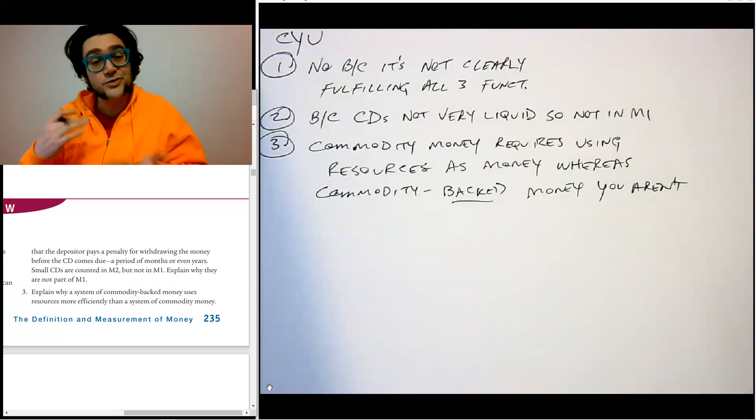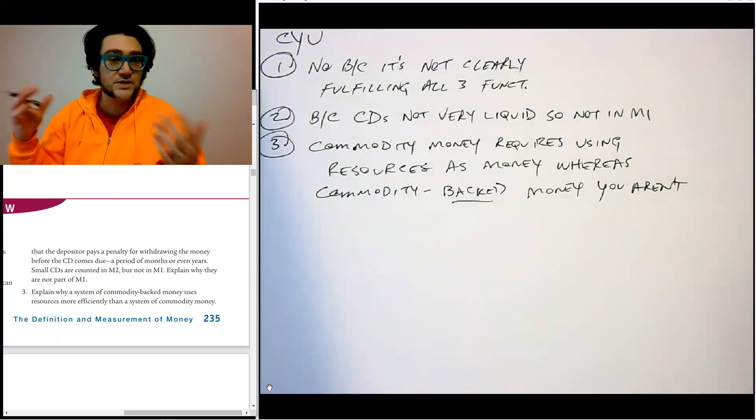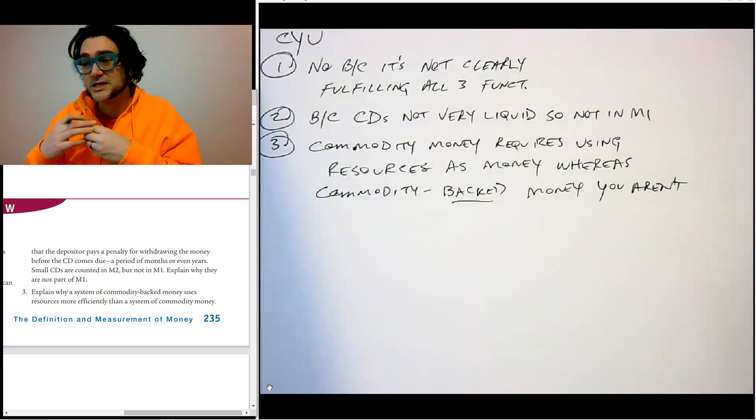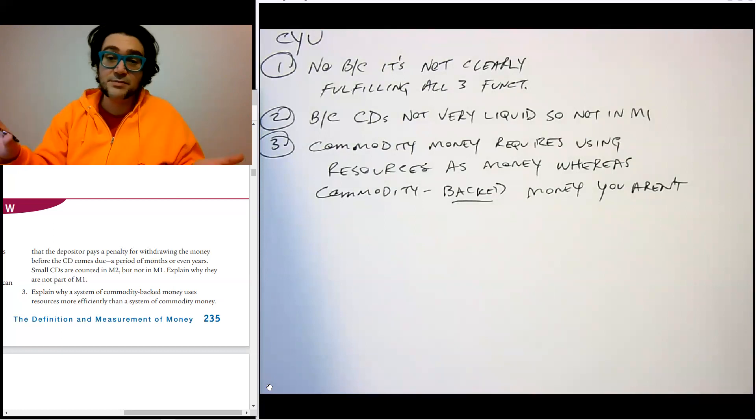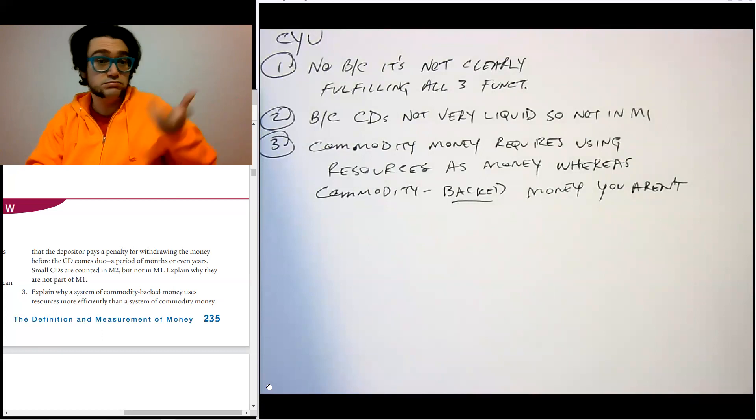Now, they still have the downside that you aren't really controlling the money supply. You can't use anything to control it, except the supply and demand of what that underlying commodity is. And so that's why most governments today have moved away from even commodity-backed money, because you don't want to basically put the hands of your currency into gold and silver, where there's just supply and demand.